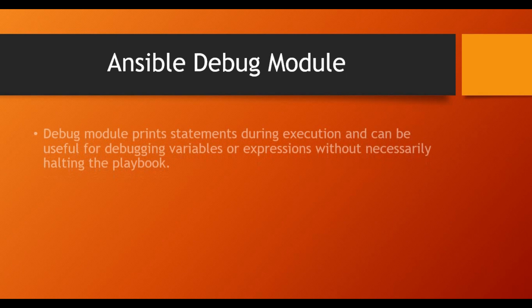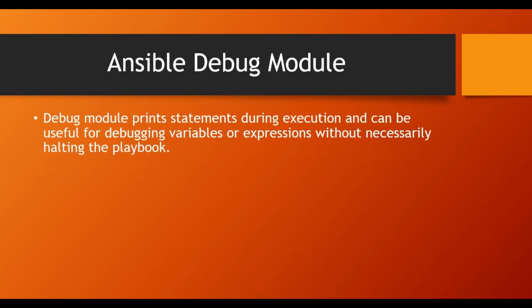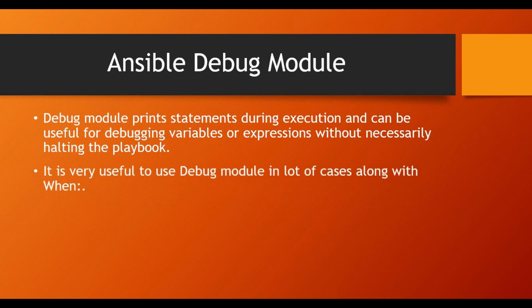Let's talk about the Ansible debug module first. The debug module is used for printing statements during playbook execution. When we run a playbook it runs on the machine, but we don't see the output. The debug module is useful for debugging variables or expressions without halting the playbook — it will show a statement on the screen but will not stop the playbook itself.